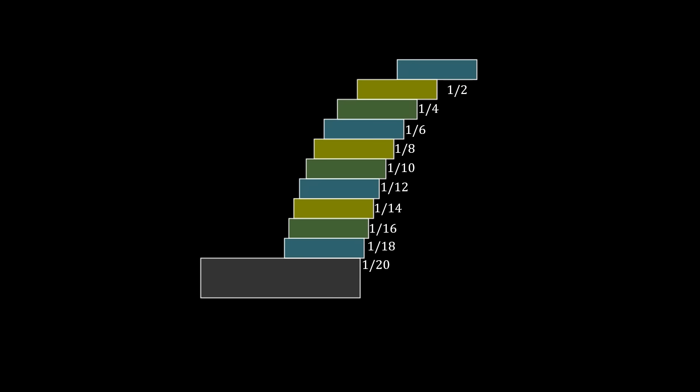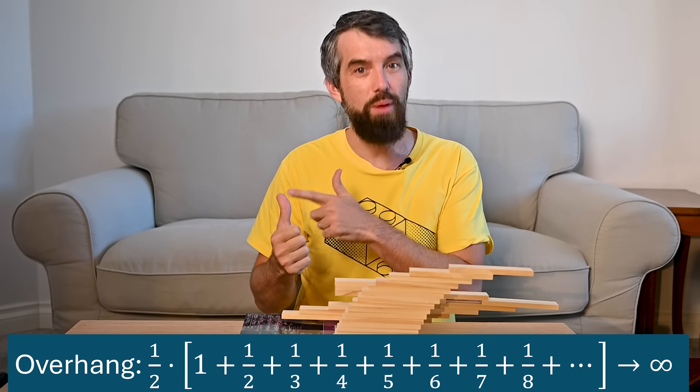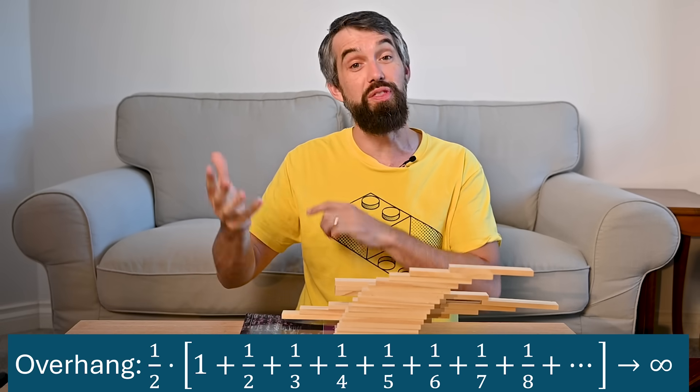We'll derive these numbers later in the video, but for now note that adding those numbers up gives the total overhang. And that sum is half of the infamous harmonic series, which is one plus a half plus a third plus a quarter plus a fifth and so on.